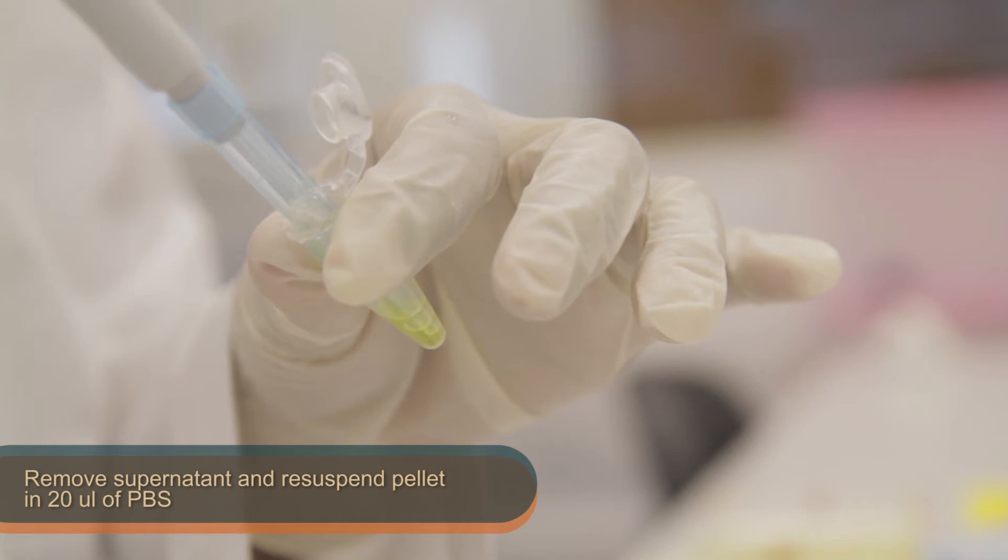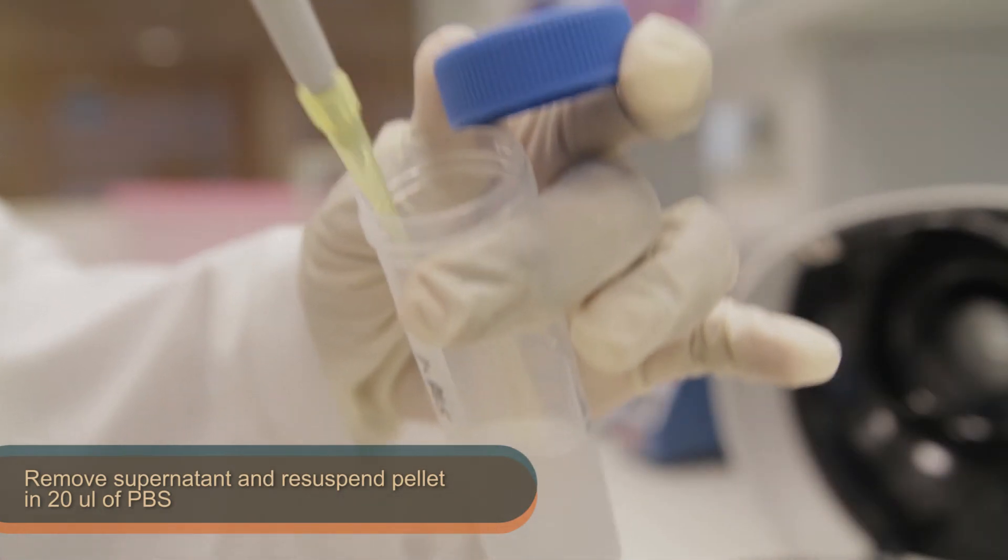Then, remove the supernatant carefully and re-suspend the cell pellet in 20 µl of PBS.